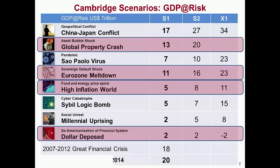This slide shows — if you look at the S1 column, you can see they're ordered by rank. This is a slide Andrew put up. China-Japan conflict is at the top — 17 trillion — that's a serious war, kind of global. Compare that: the 20 at the bottom is five years' worth of GDP damage done in 2014 by the equivalent of the global financial crisis. That gives you the scale.